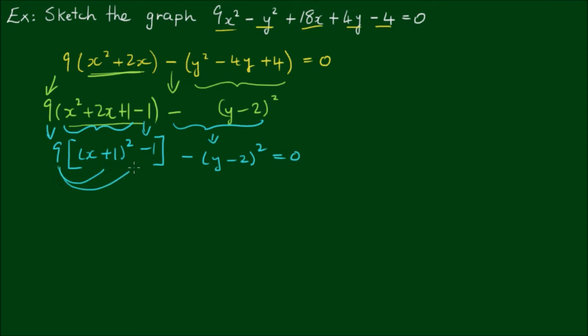So expanding the 9 into these terms, I have 9(x + 1)² - 9 - (y - 2)² = 0. We can take this -9 to the other side, so on the right hand side it becomes a +9. And then dividing all the terms on both the left and right by 9...